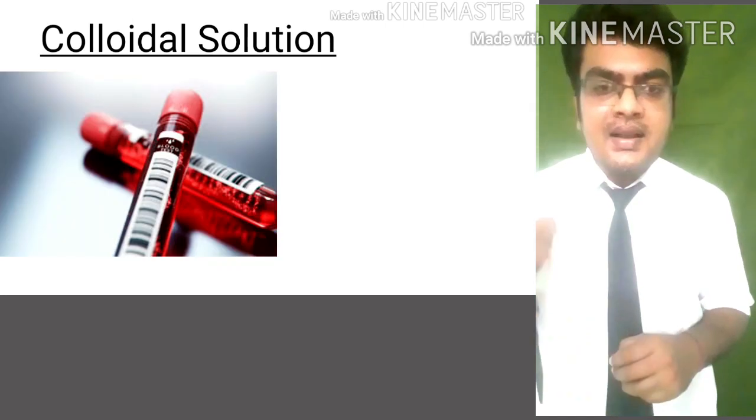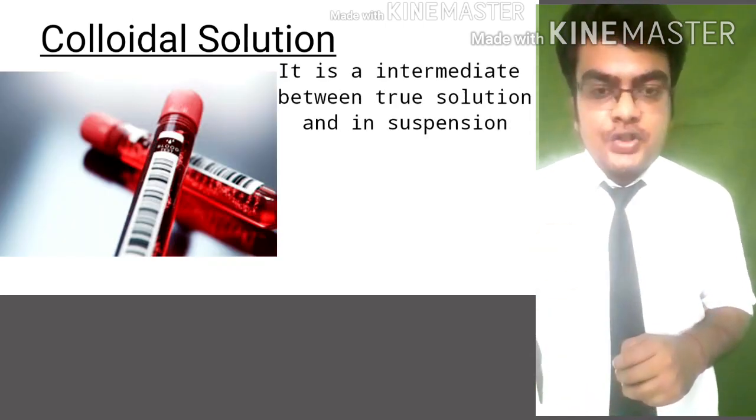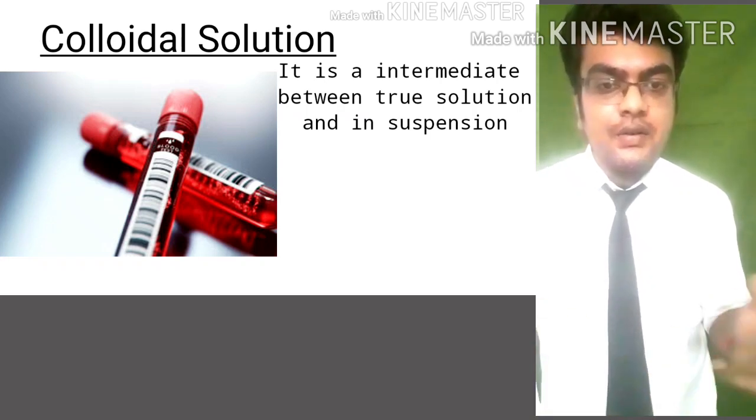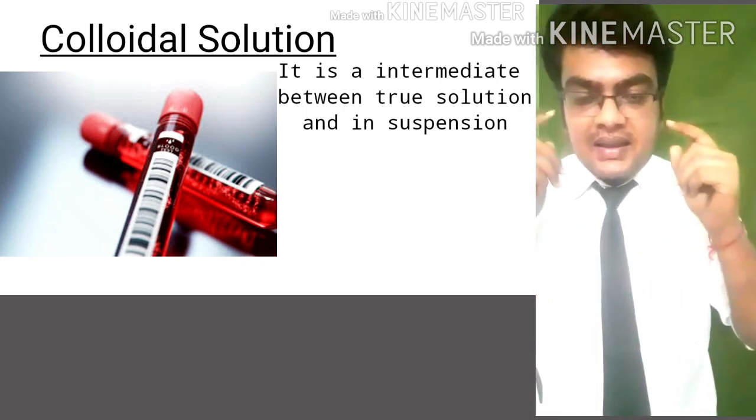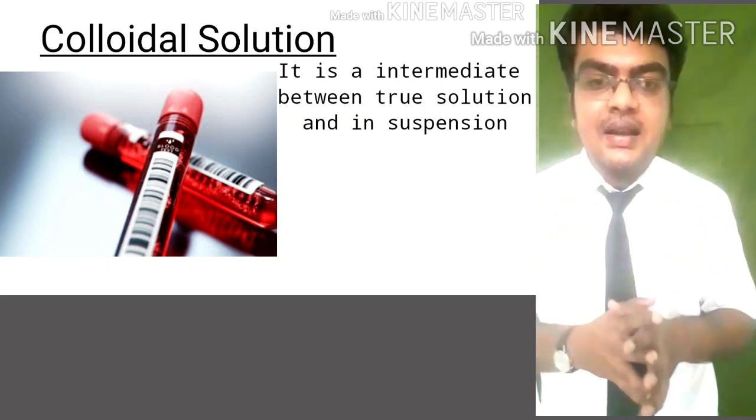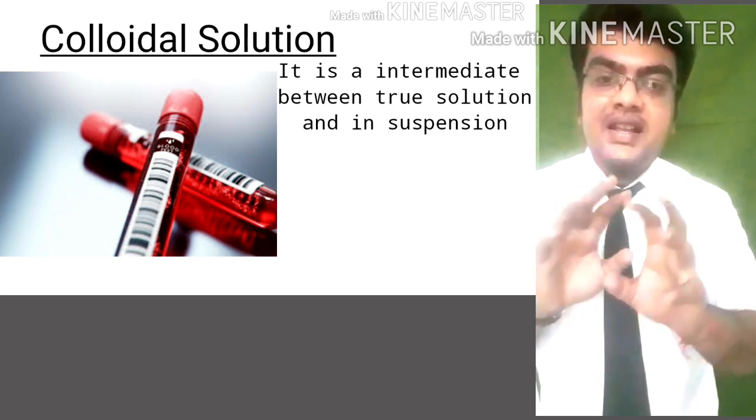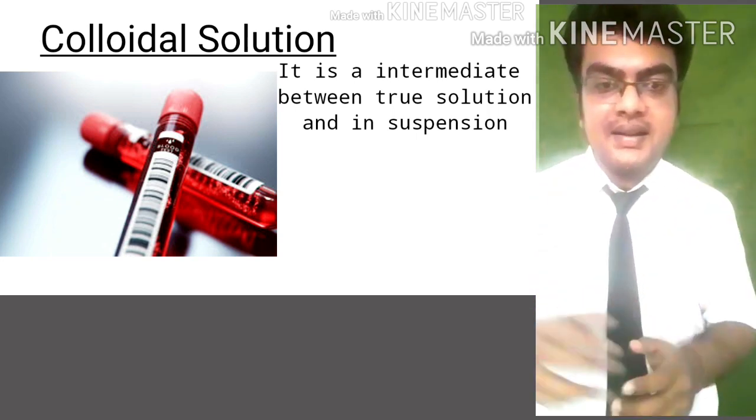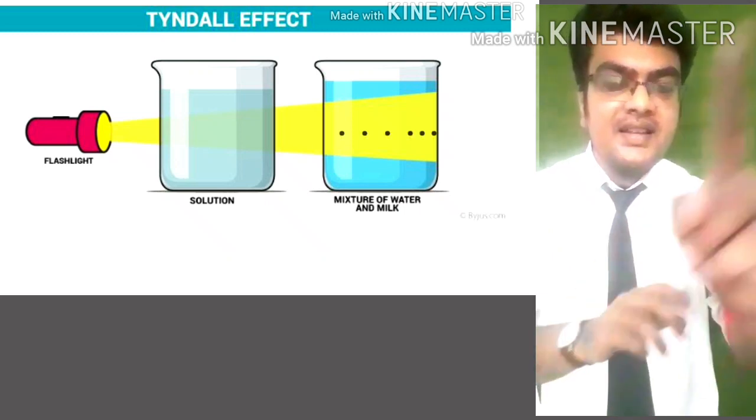And the third part, very important, colloidal solutions. Here it is very important to note that it is an intermediate between solution and suspension. What does it mean? We cannot see the particles by just naked eyes. Here we have to scatter the beam of light to observe the particles, then we are able to see them. When we put a beam of light on the beaker in a dark room, then we can see the particles.